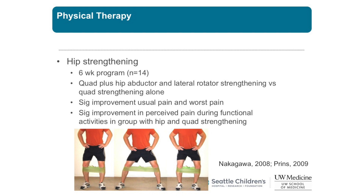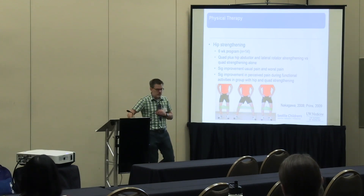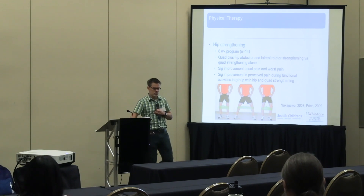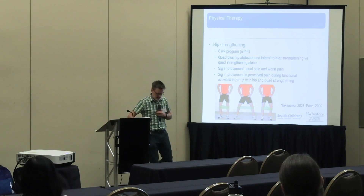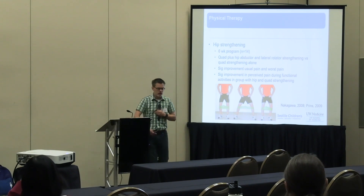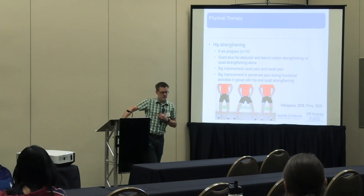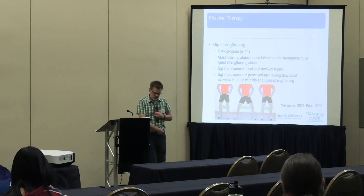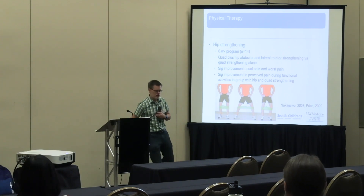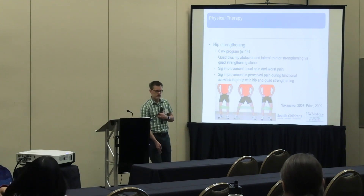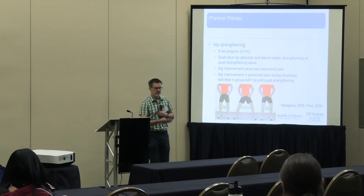The reason hip strengthening matters: if your glute medius is weak, anytime you're standing on one leg you can't keep your pelvis level. The hip drops, you thrust the opposite hip out, and that pulls the kneecap farther to the side. If you tighten that hip up and keep it level, the kneecap tracks straighter in the trochlear groove, and that stops the pain. In clinic I'll actually demonstrate this to help with buy-in for PT.